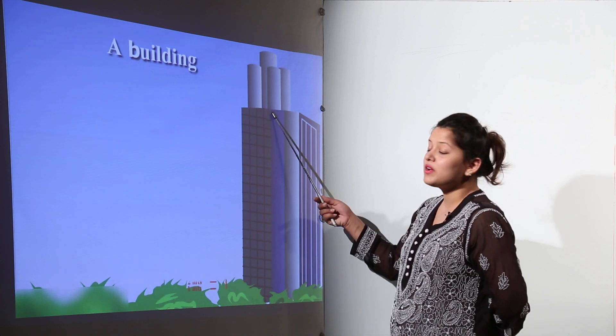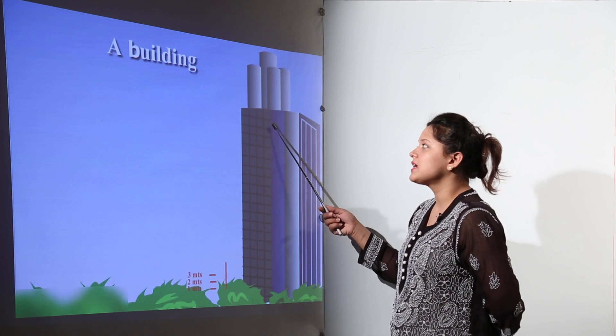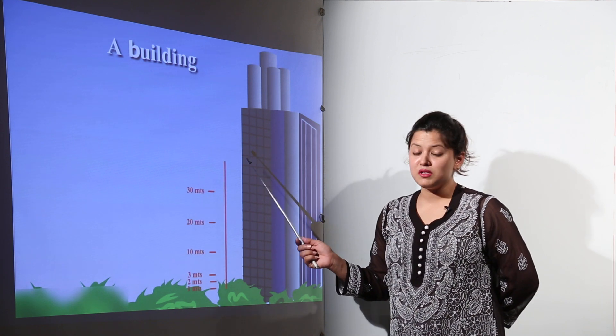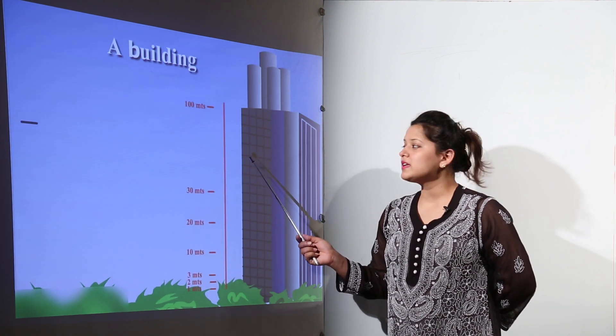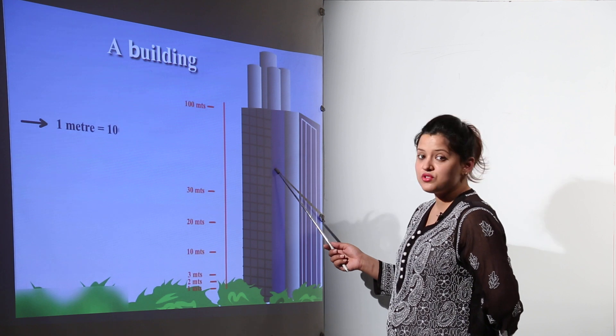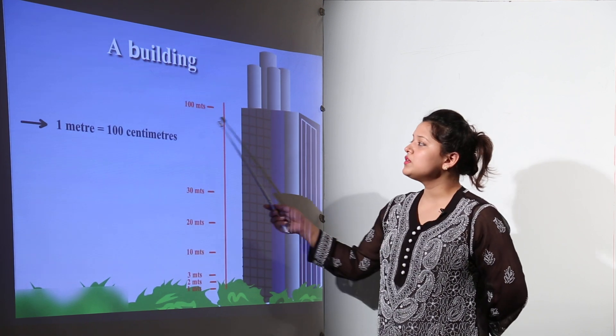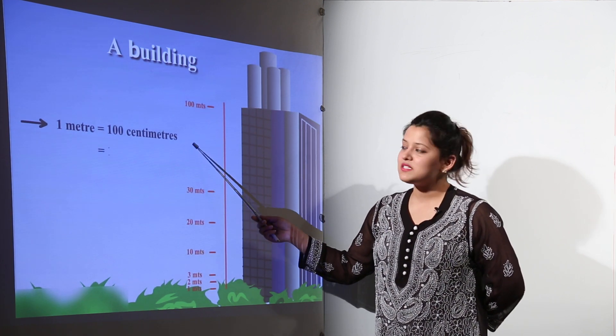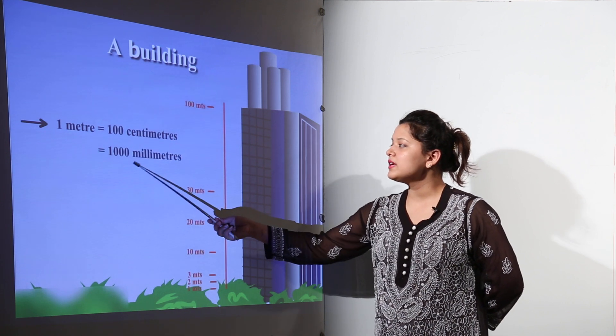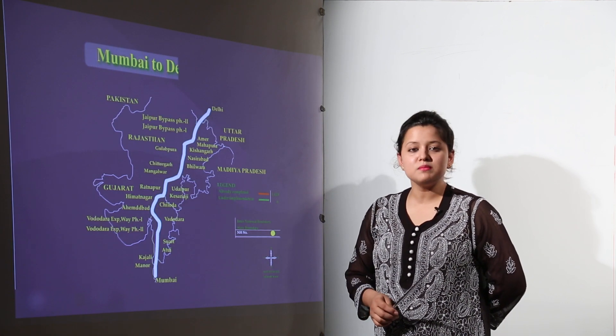Now this is a building over here and we want to measure its height. Its height if measured in centimeters would be too big. So centimeters are too small to be measuring this building. Therefore we use the meters here. One meter would be equal to hundred centimeters or it would be equal to one thousand millimeters.